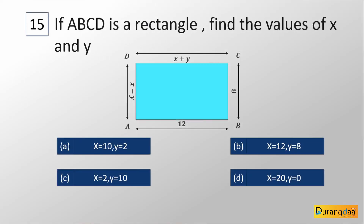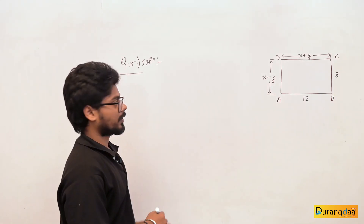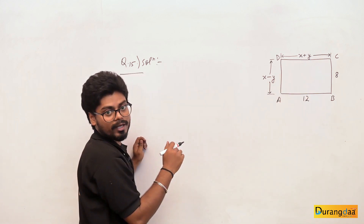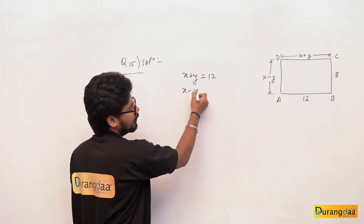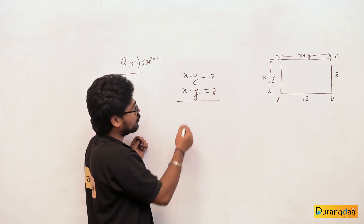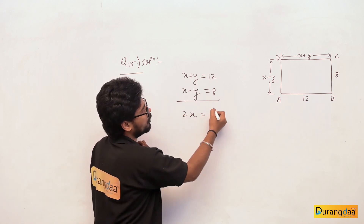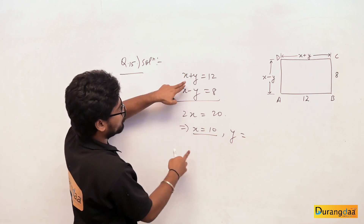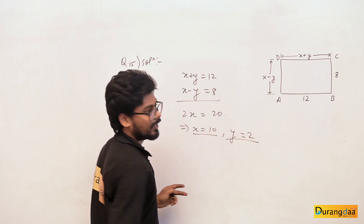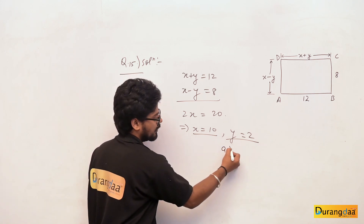Question number 15: ABCD is a rectangle. Find the values of X and Y. Options: A: X=10, Y=2; B: X=12, Y=8; C: X=2, Y=10; D: X=20, Y=0. Since opposite sides of a rectangle are equal, we get X+Y=12 and X−Y=8. Adding these equations: 2X=20, so X=10. Then Y = 12−10 = 2. The correct option is A.